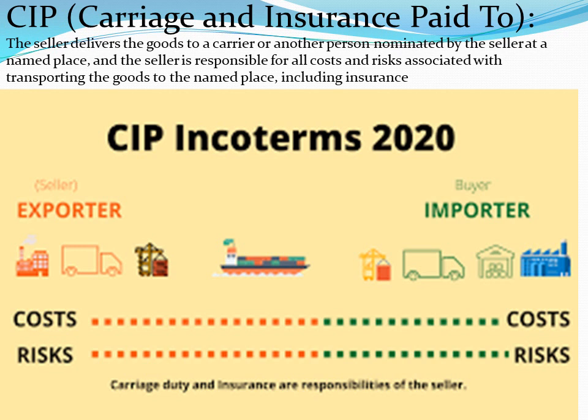CIP or Carriage and Insurance Paid To: The seller delivers the goods to a carrier or another person nominated by the seller at a named place, and the seller is responsible for all costs and risks associated with transporting the goods to that named place, including insurance.